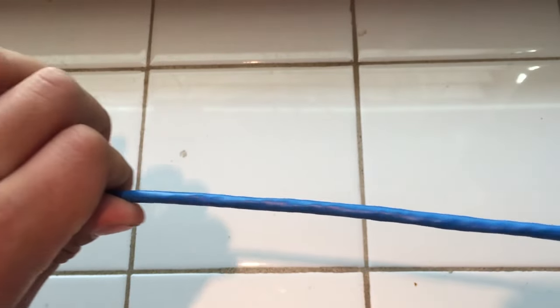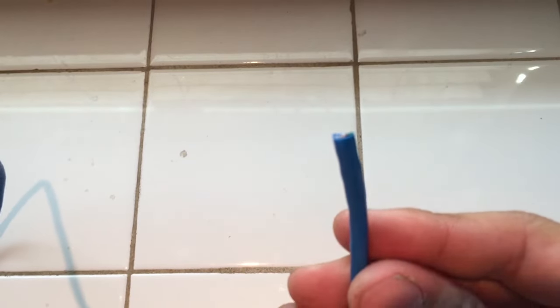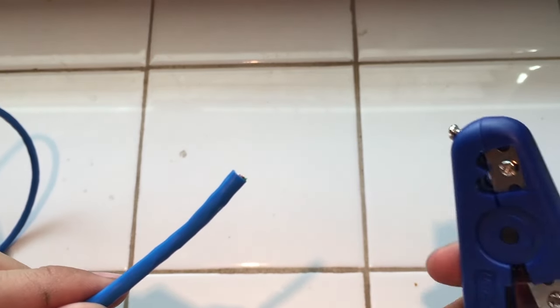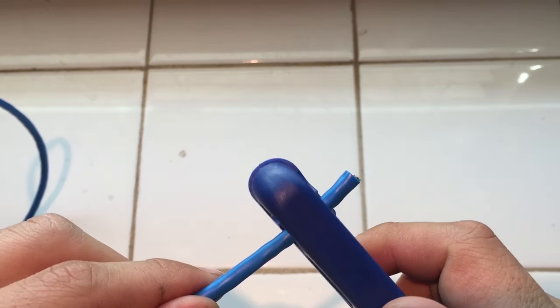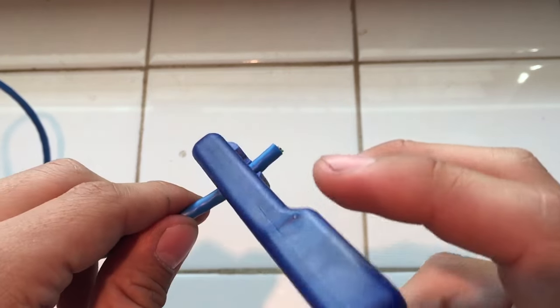So you want to start by measuring out your cable. Once you've done that, cut your cable. Once you're done cutting the cable, go ahead and strip off about a half an inch of the housing.